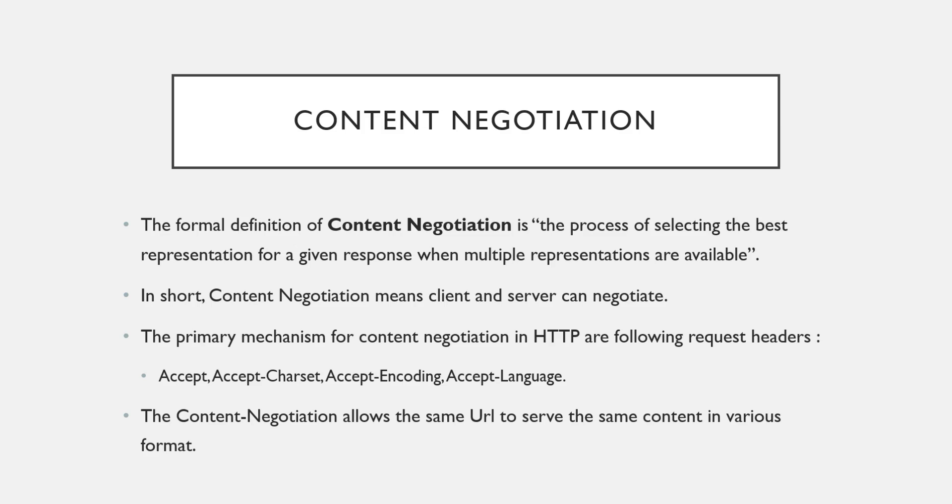The data can be represented in XML format, JSON format, or any other format like HTML — whatever format your Web API supports. So we are selecting the best representation for a given response when multiple representations are available. In the last video on media type formatters, we saw that Web API has default support for XML, JSON, BSON, and form URL-encoded data — so it has these four representations available, and among them it chooses the best one.